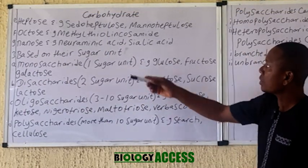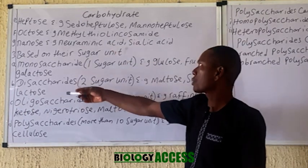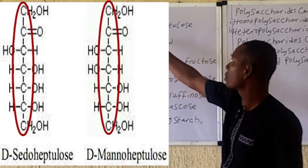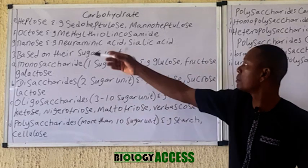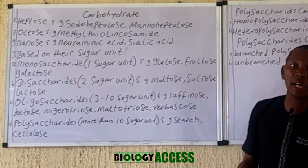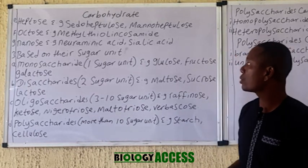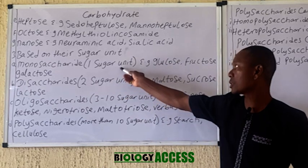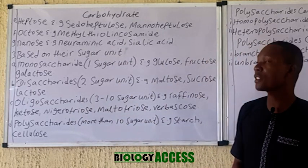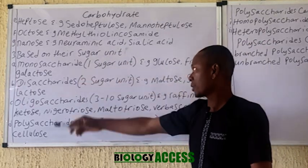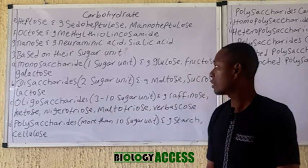Heptoses have seven carbon atoms; an example is sedoheptulose and mannoheptulose. Octoses have eight carbon atoms, and nonoses have nine carbon atoms. Carbohydrates can also be classified based on the number of sugar units into monosaccharides, disaccharides, oligosaccharides, and polysaccharides.